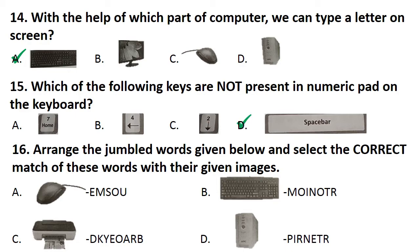Question number 16, arrange the jumbled words given below and select the correct match of these words with their given images. In option A we get M-O-U-S-E mouse, in option B we get monitor, in option C we get keyboard, in option D we get printer. And the image shown in option A is of a mouse, so the correct answer is option A.